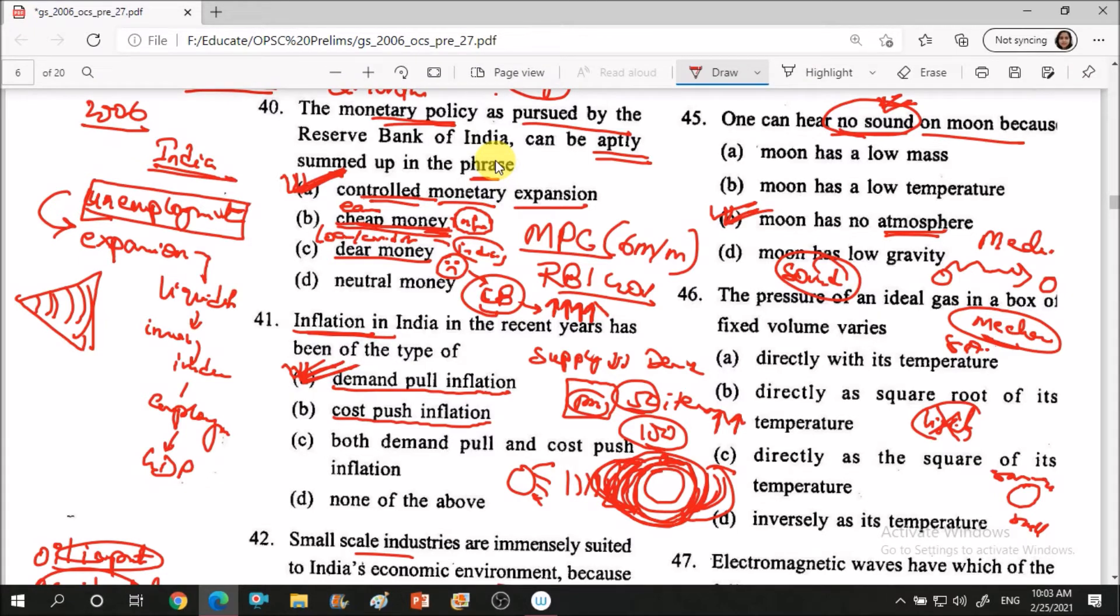Moon has no strong magnetic field. So whatever solar winds are there, they destroy moon's atmosphere. That is why moon has no atmosphere.